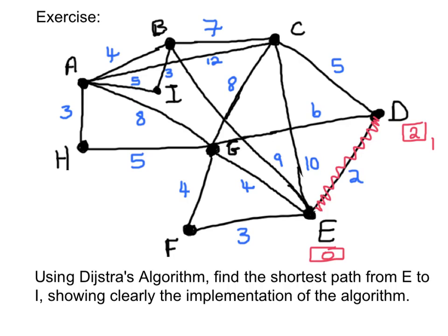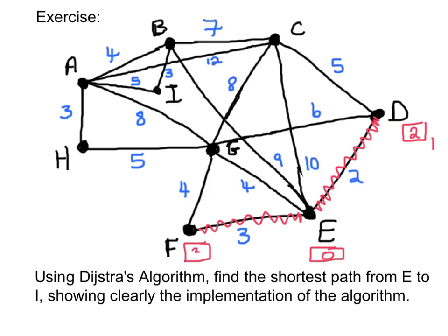Because it hasn't arrived at I, the algorithm continues searching, this time out from E and from D. From E it can go to F at 3, G at 4, B at 9, C at 10. Searching out from D, D→C has a combined weight of 5 plus 2, which is 7, and D→G has a combined weight of 6 plus 2, which is 8. The algorithm chooses the shortest route, which is E→F at 3. It arrives at F and labels it with a 3 — the second place it arrives at in its search.